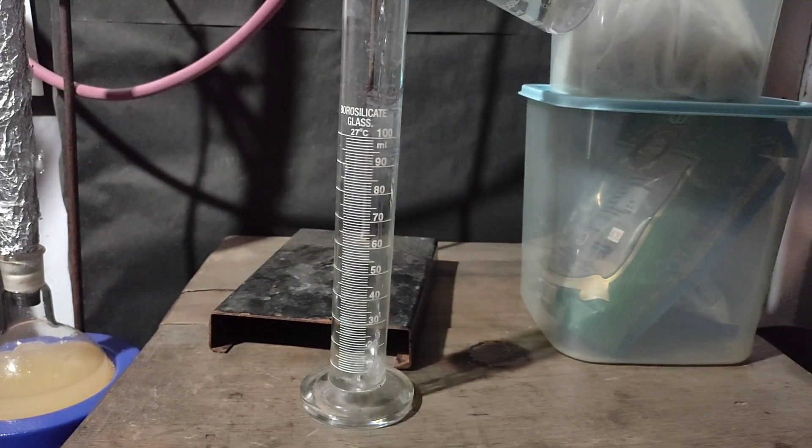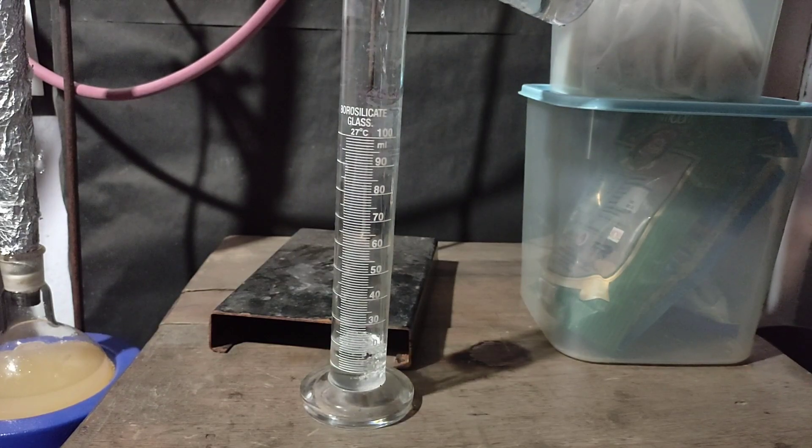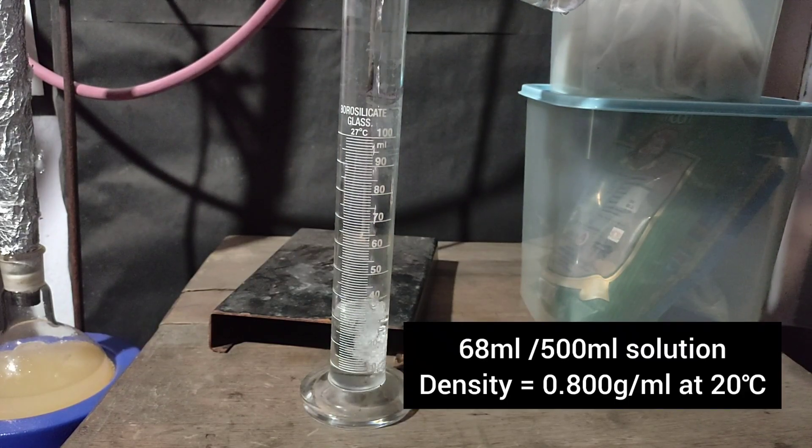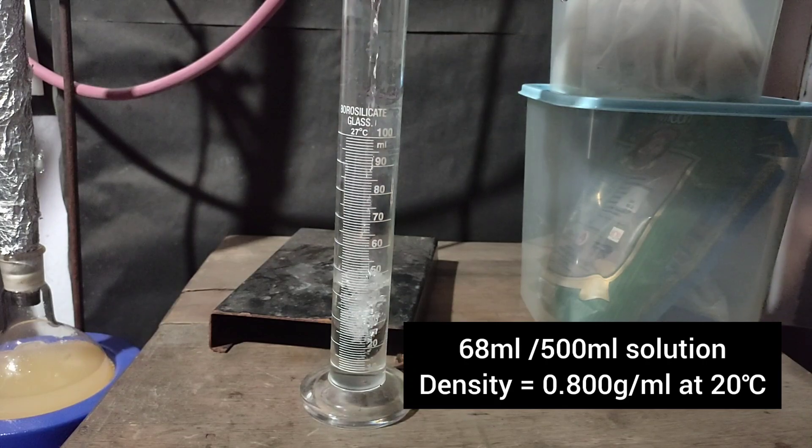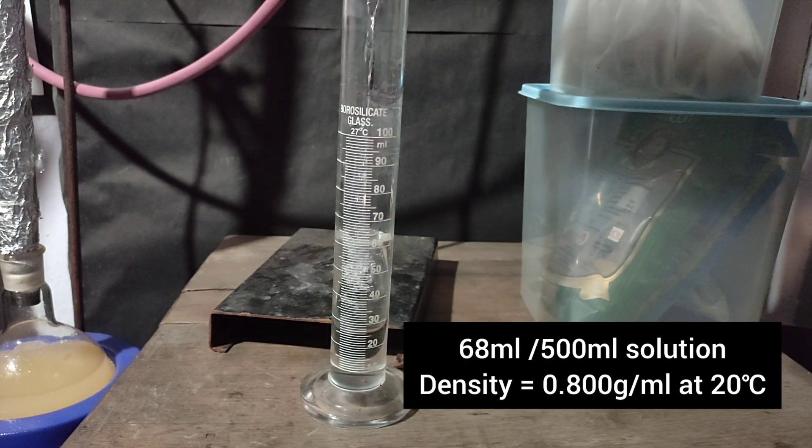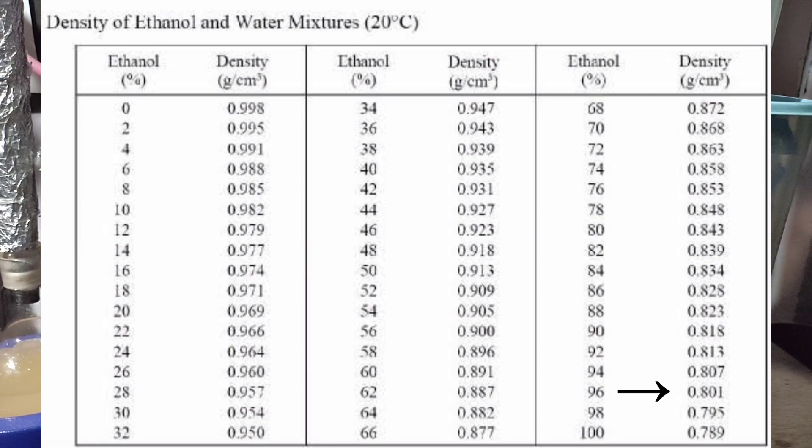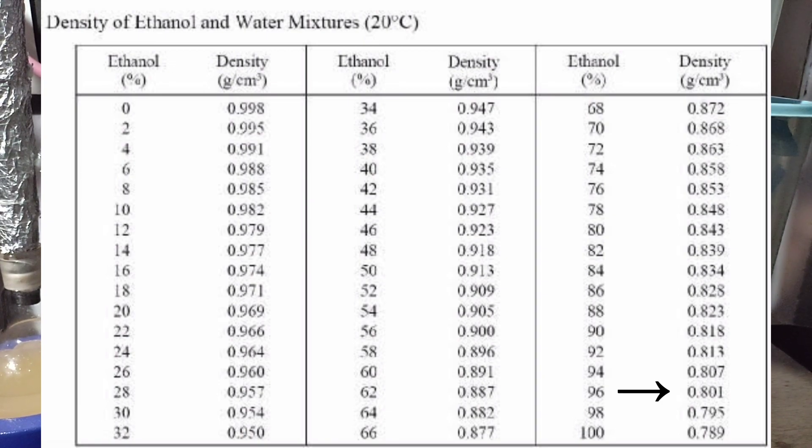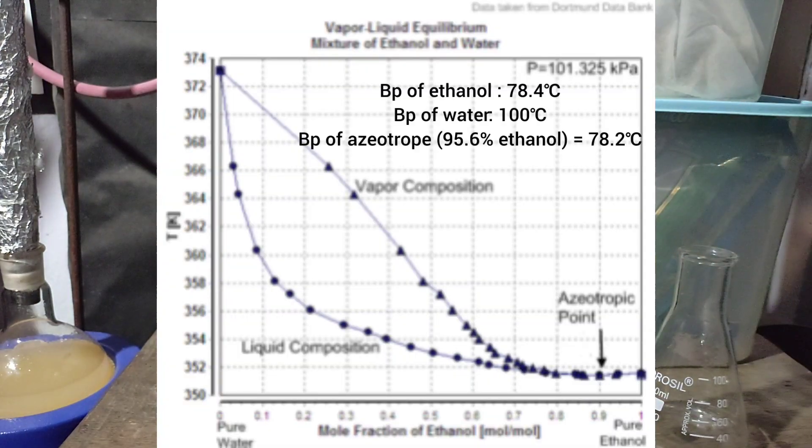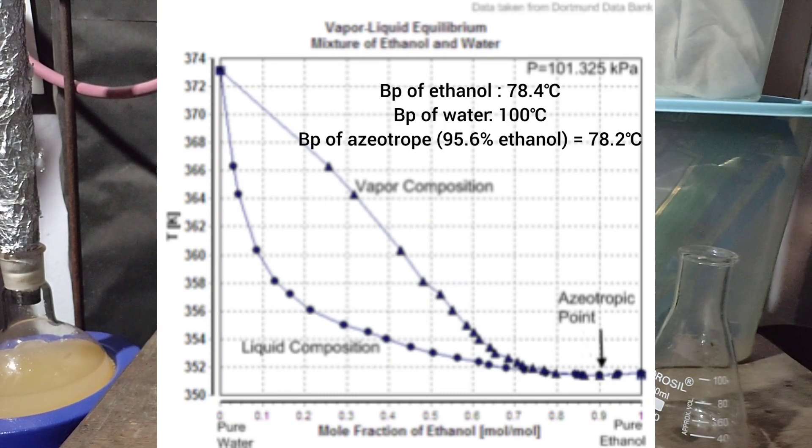I measured the density and quantity of distillate. The quantity was 68ml and density was found to be 0.800g per ml at 20 degrees Celsius. Using the concentration-density chart, the percentage of ethanol should be 96% which is not possible as it is not possible to get higher than the azeotropic 95.6% ethanol-water mixture by fractional distillation.